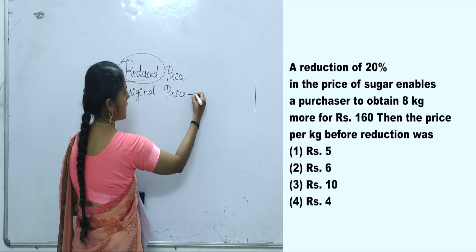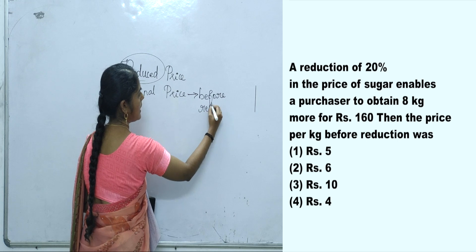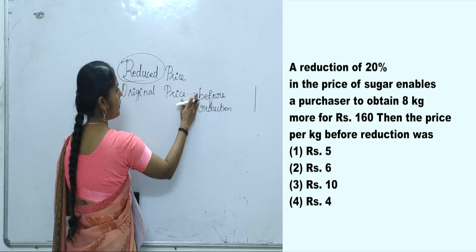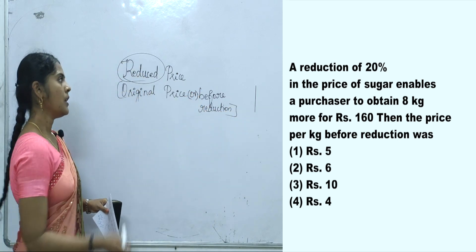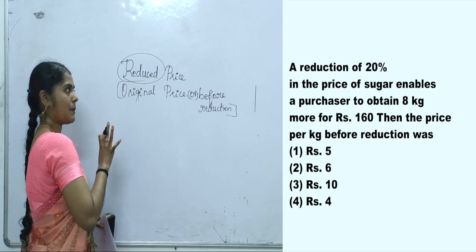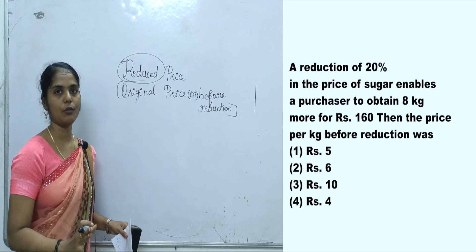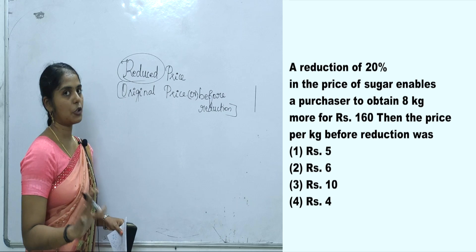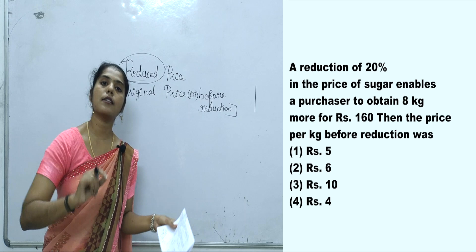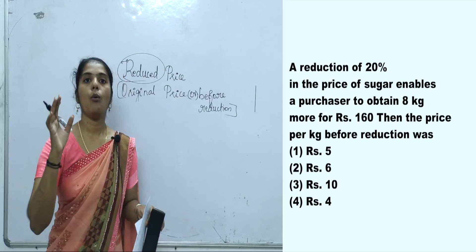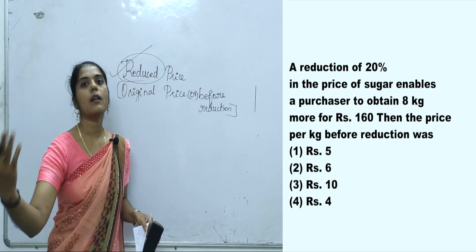Now, original price and 'before reduction' mean the same thing. Original price is the price before reduction. Reduced price is the current lower price. This distinction is important. We can now find the original price from the reduced price.